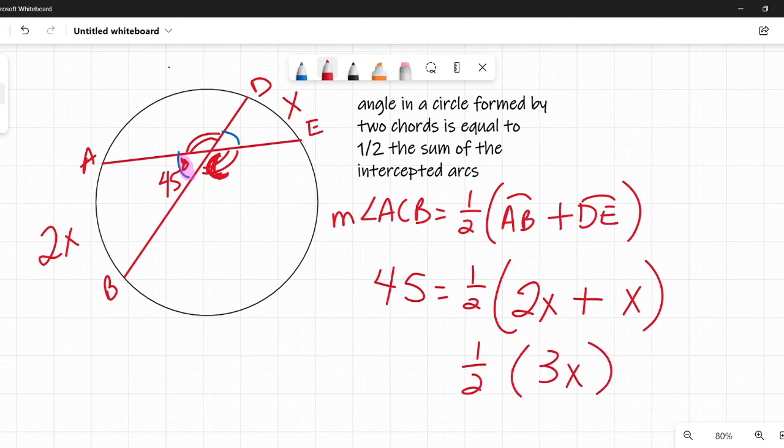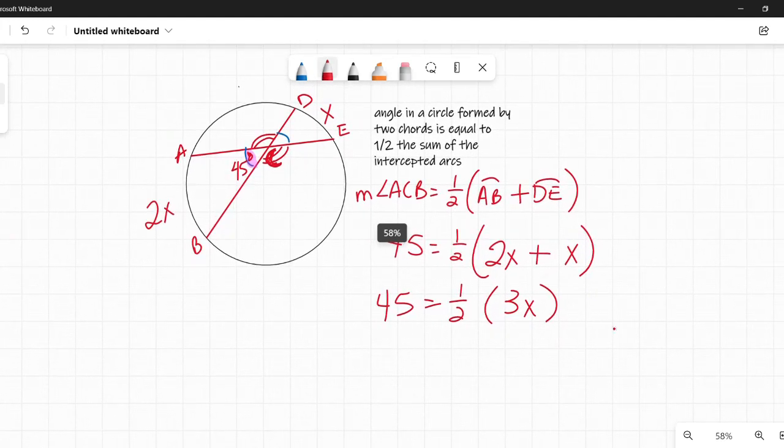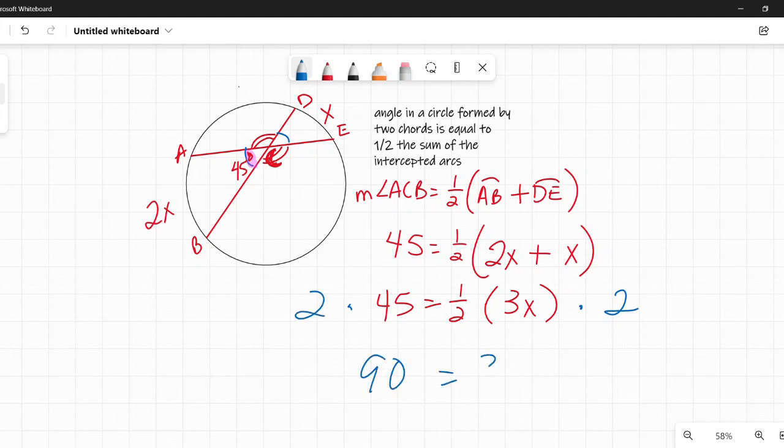So, I can add those together and I get 1/2 times 3x equals 45. Just because I'm not a huge fan of fractions I'm going to get rid of that fraction. I'm going to multiply both sides by 2 to get rid of that 1/2. If you wanted to multiply 1/2 by 3x first, it's fine. You're going to get the same answer either way. But I'm going to multiply by 2. So, I have 90 on the left and 3x on the right. I'm going to divide both sides by 3. 90 divided by 3 is 30. X is equal to 30.